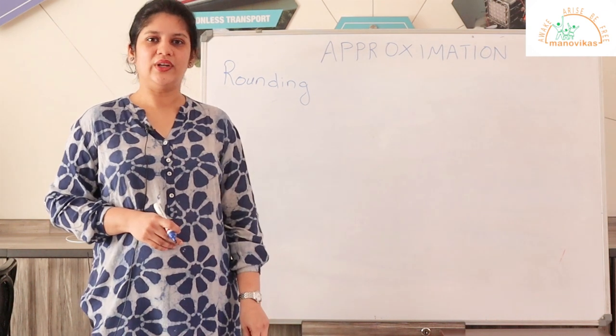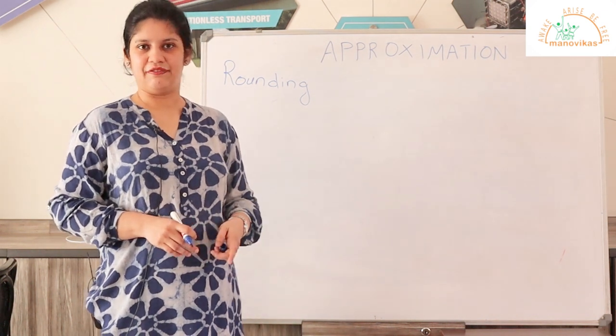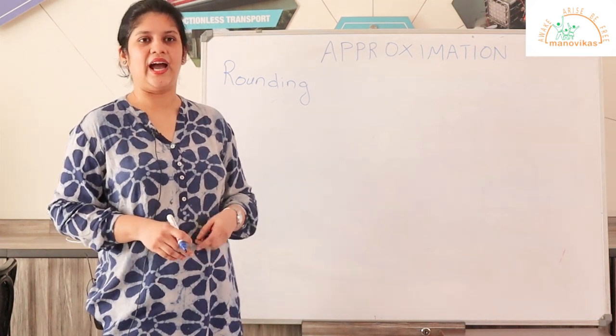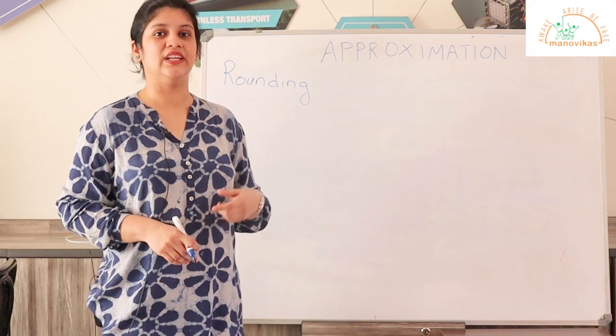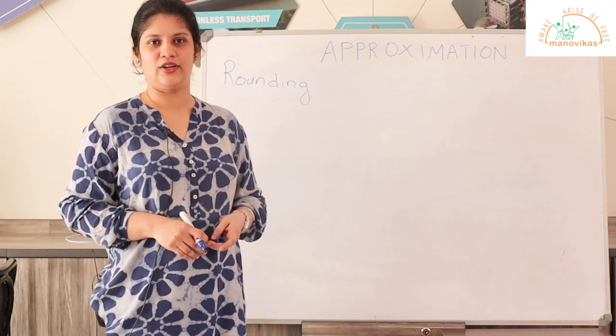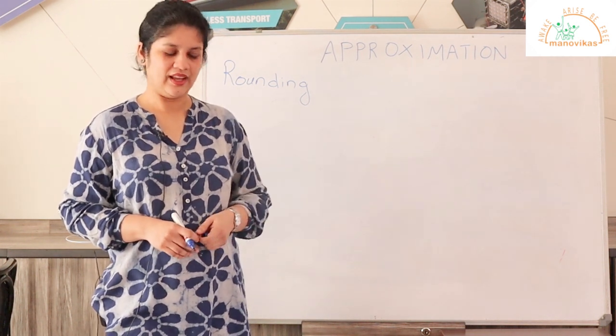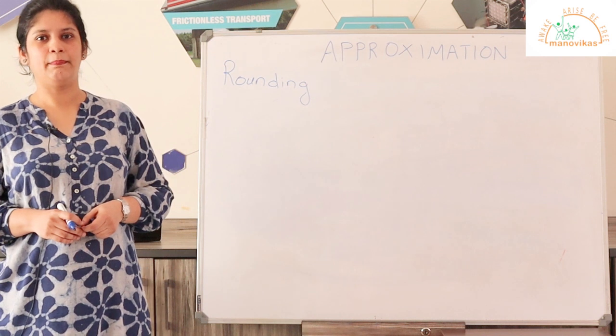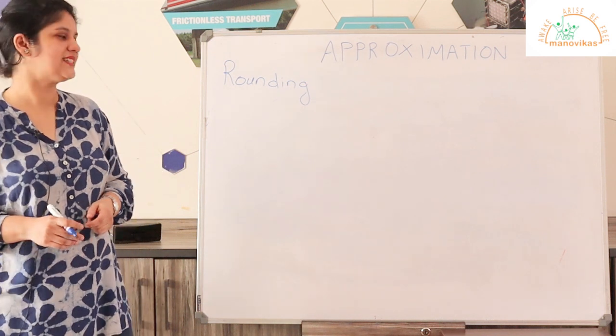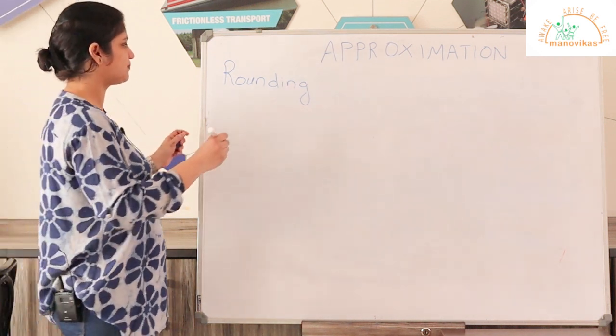Rounding up is done in different ways. You can either round up to the nearest 10, to the nearest hundred, or to the nearest thousand. Let us begin by rounding up to the nearest 10.